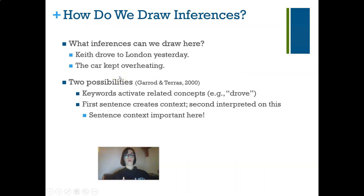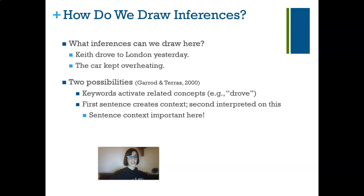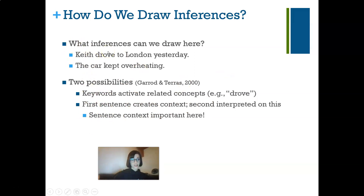How do we draw inferences? Consider: 'Keith drove to London yesterday; the car kept overheating.' We could infer he did reach London but had some stops along the way, and that he probably needs to get his car fixed. Gerard and Terrace in 2000 proposed two possibilities: first, keywords activate related concepts — 'drove' activates car, trip, etc. — but more likely, the first sentence creates the overarching context and the second sentence is interpreted based on it. What's really critical is that sentence context.